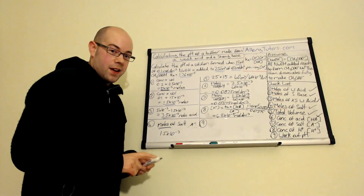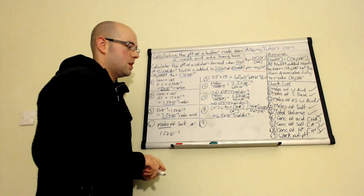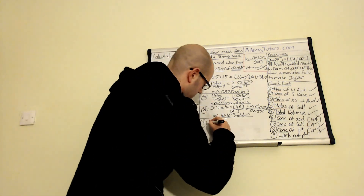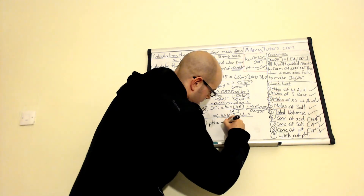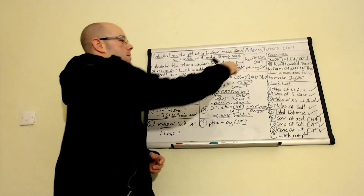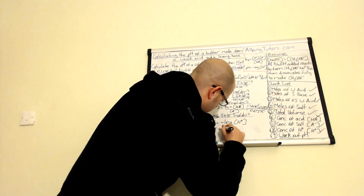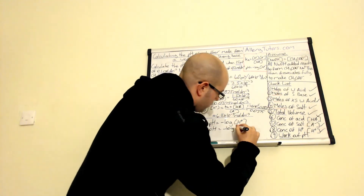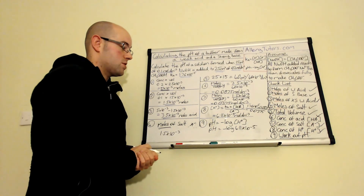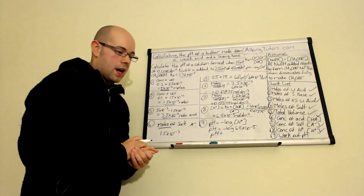Finally, now that we have the concentration of H⁺, we can work out the pH. Using pH = −log[H⁺], we substitute in 4.11 × 10⁻⁵. That gives us a pH of 4.39. That is how you work out the pH of this buffer solution.